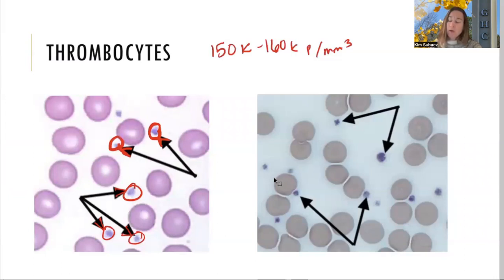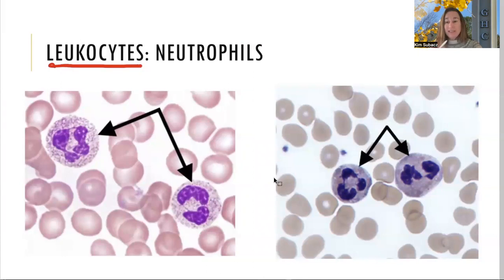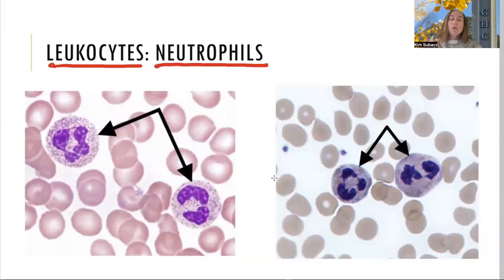Thrombocytes are involved in hemostasis — different clotting factors mesh together to capture these platelets and form a clot. There are 150,000 to 160,000 of them per cubic millimeter; recognize them as those tiny little purple dots. The last group are leukocytes — all white blood cells. In AP2 we want you to recognize the different types. There are five types; we'll go granulocytes first, then agranulocytes.